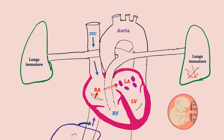The blood from the right ventricle is pumped into the pulmonary artery, which would normally supply the lungs. But because the lungs are immature and not functional, and due to high pulmonary resistance, only a small amount of blood goes to the lungs. Most of the blood is shunted through the ductus arteriosus.